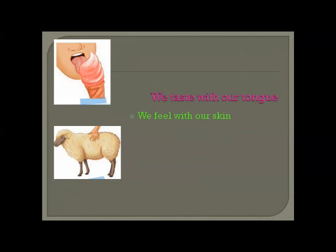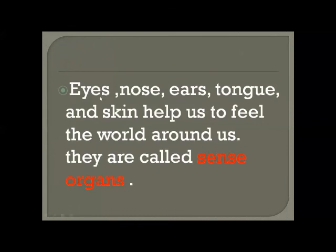Now you may observe that there are five things: eyes, nose, ears, tongue, and skin. These five are the sense organs. Eyes, nose, ears, tongue, and skin help us to feel the world around us, so they are called sense organs. This is all about our body from Social Lesson 3. I hope you understood the sense organs and the parts of our body and how they help us. Thank you children.